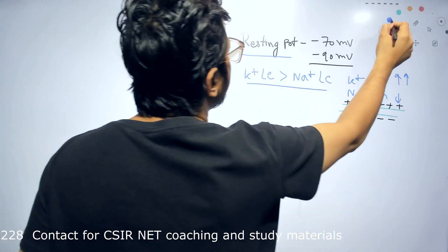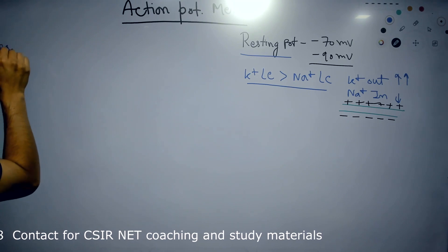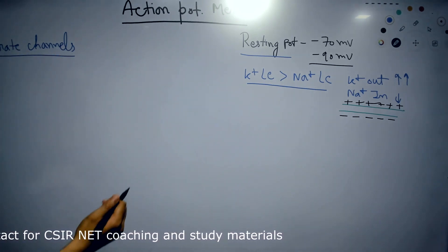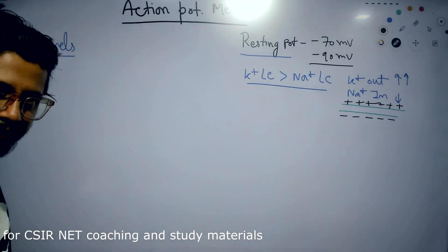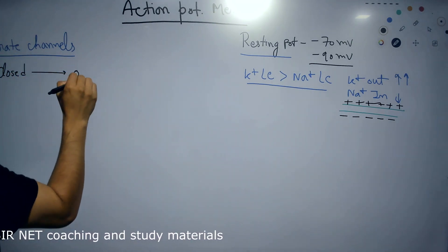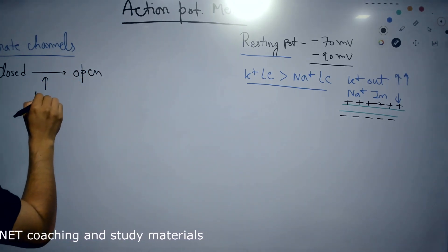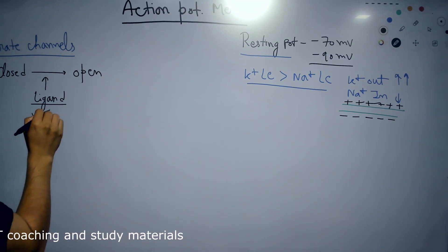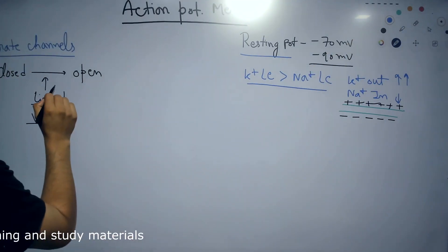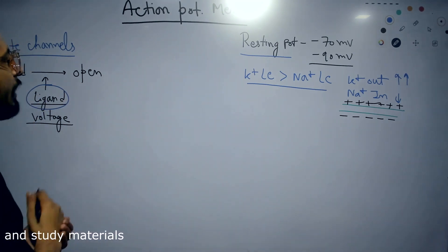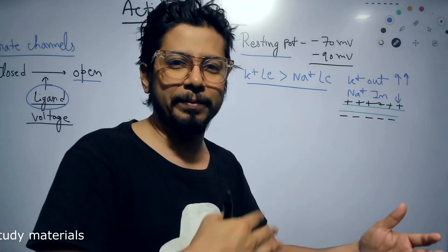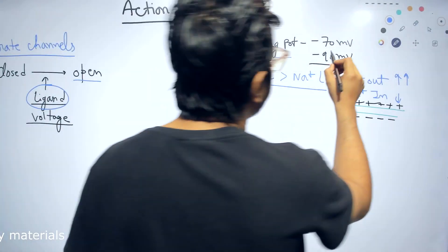In action potential, gated channels are also involved. Gated channels are transmembrane channel proteins embedded in the membrane that are normally closed. They open up either when a specific ligand binds to them or when there is a change in voltage. Whenever the channels open, they initiate the transport of ions across the membrane, which can change the membrane potential.